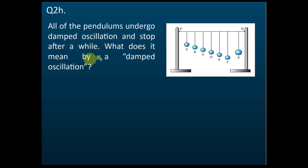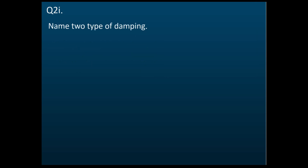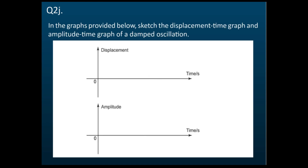All the pendulums undergo damped oscillations and stop after a while. A damped oscillation is an oscillation with decreasing amplitude. There are two types of damping: internal damping and external damping. You just need to know there are two types of damping. The next famous question asks you to sketch the displacement-time graph and amplitude-time graph of damped oscillations.